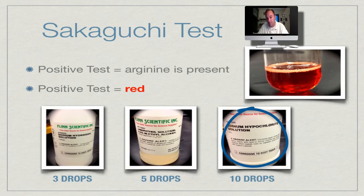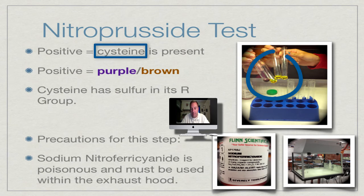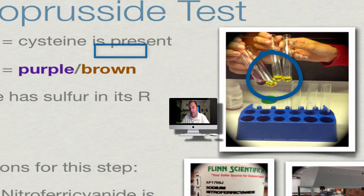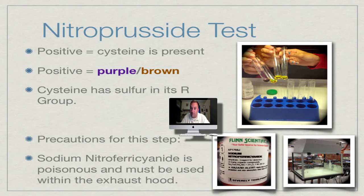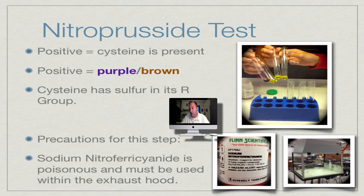The nitroprusside test tests for the amino acid cysteine. A positive result will be purple or brown — you can see in the picture that the positive tube is a dark purplish-brown. Cysteine is unique because it has sulfur in its R group. An important precaution: you must use the exhaust hood for this step because we're using sodium nitroferrocyanide, which contains cyanide — very poisonous, as it disrupts the ATP-ADP pathway. The pictures of positive results were actually taken inside the exhaust hood.